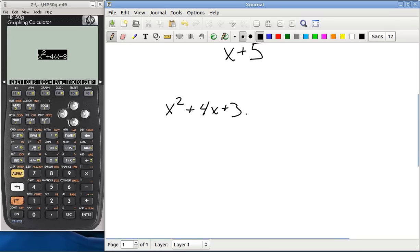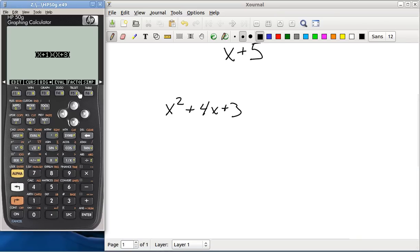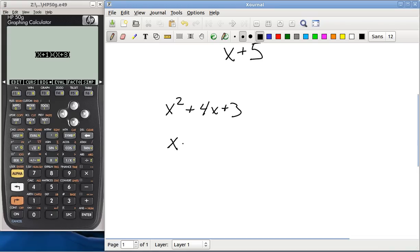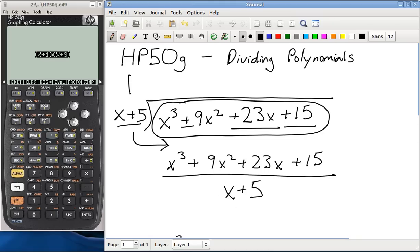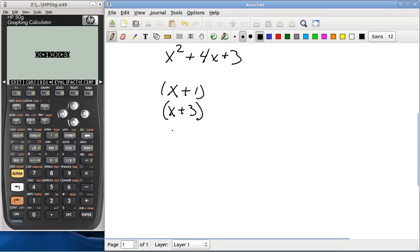Now you could probably factor that in your head, but why do that when you can hit the factor button, f5? The factors of this equation are x plus 1, x plus 3, and don't forget this guy right here. That's also a factor, since we divided it by that.